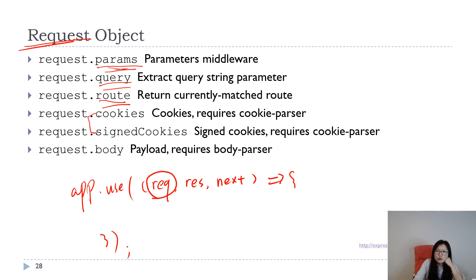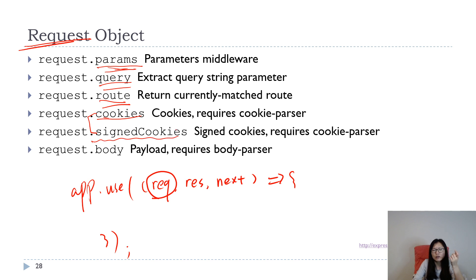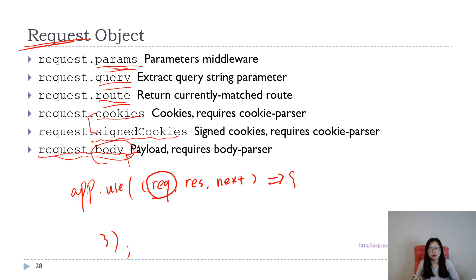You can also get the route, cookies, and signed cookies. Cookies are used when you want to keep track of user information — for example in a session, because HTTP is stateless. A regular cookie is not encrypted, while a signed cookie is encrypted. Request body you probably already know — it is used to retrieve values from an HTTP POST request.